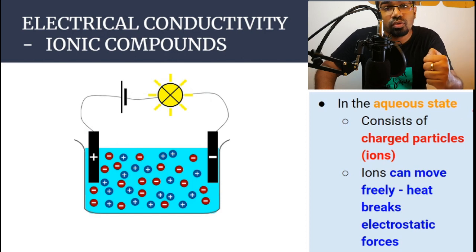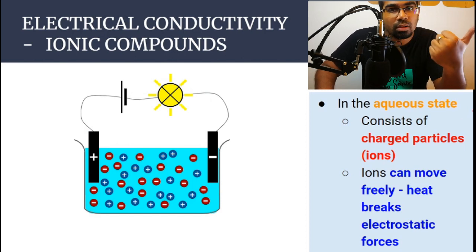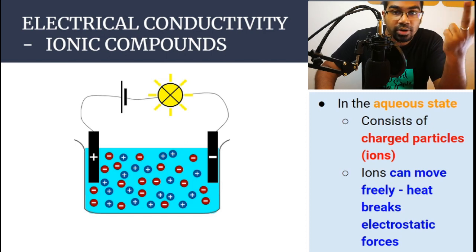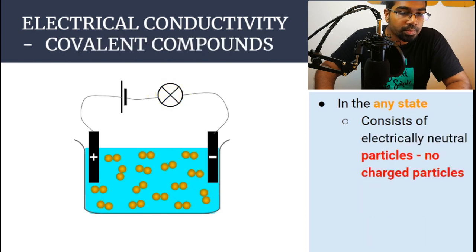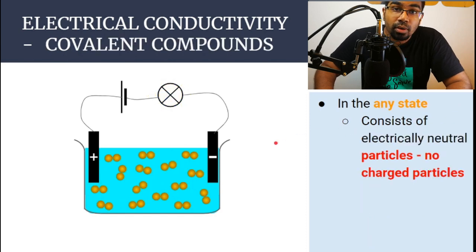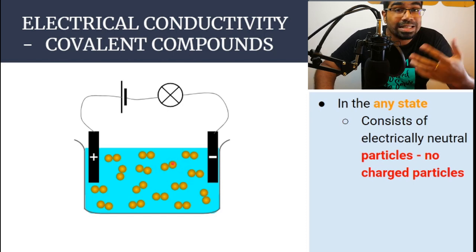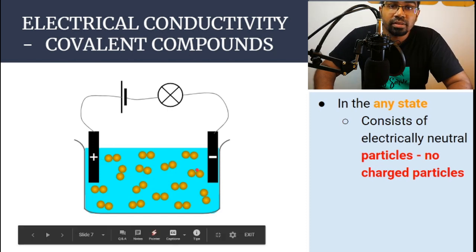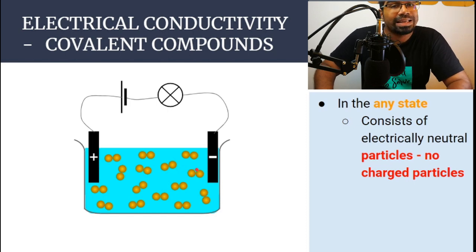The key here is free moving ions. In the solid state, although they are ions and charged particles, they are not free moving, so they cannot conduct electricity. In the molten state and aqueous state they are free moving ions, so they can conduct electricity. For covalent compounds, the molecules are electrically neutral — they have no charge. It doesn't matter whether they can move or not; they will not be attracted towards either terminal. Therefore covalent compounds cannot conduct electricity in any state.